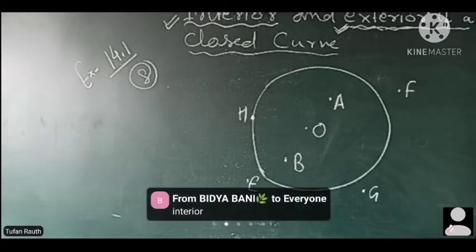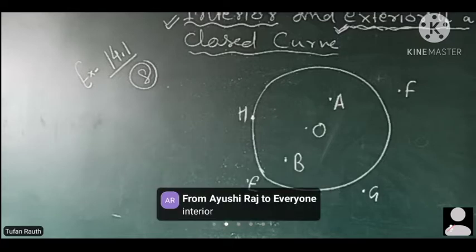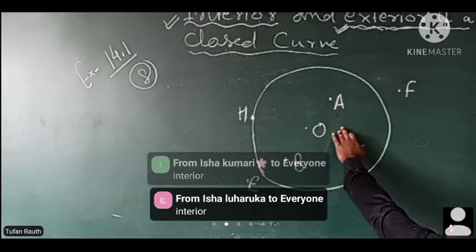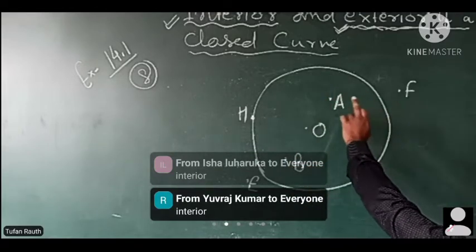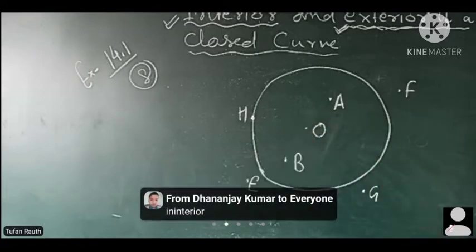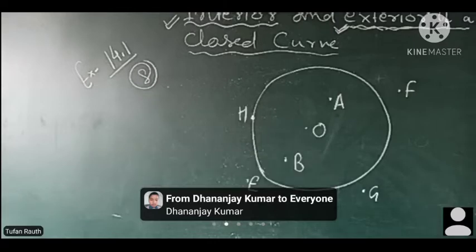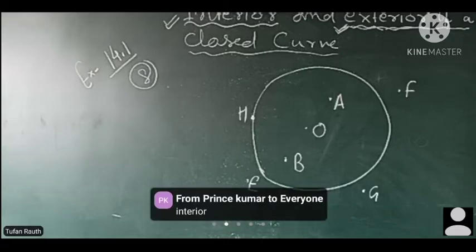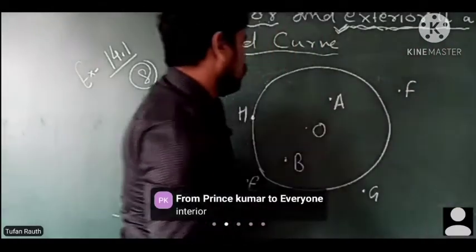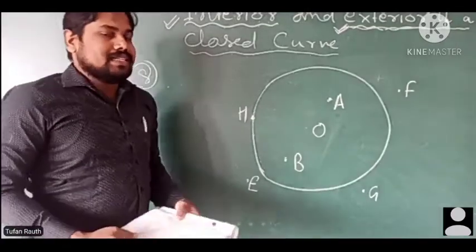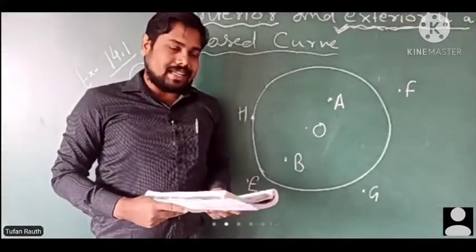I got answers from Vidya Vani, Isha Kumari, Isha Luvarika, Yubaraj, Dhananjay, Ayusi Raj, and Prince Kumar — all are correct, excellent! A and B points are lying in the interior of the circle, meaning inside the circle. After that, the second question asks where center O lies.